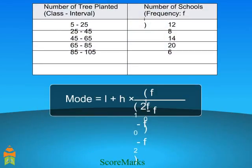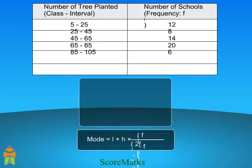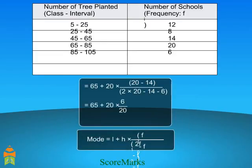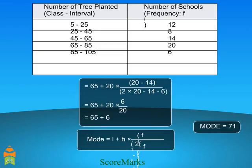According to the formula, L is equal to 65, H is equal to 20, F1 is equal to 20, F0 is equal to 14, F2 is equal to 6. Putting these values in the formula, we get mode is equal to 71.